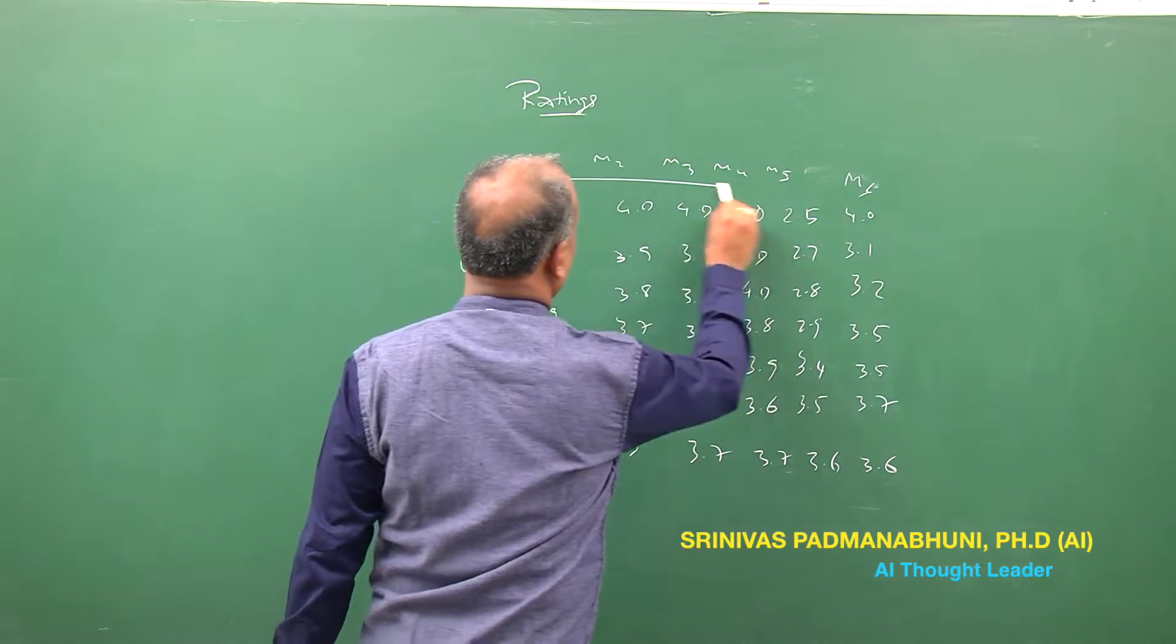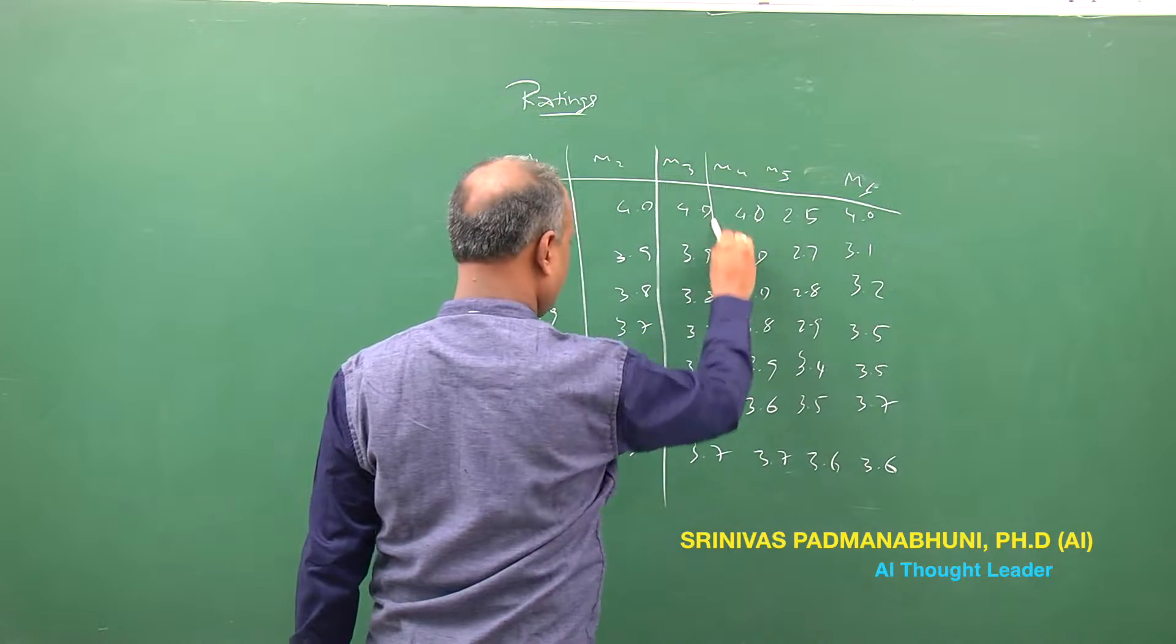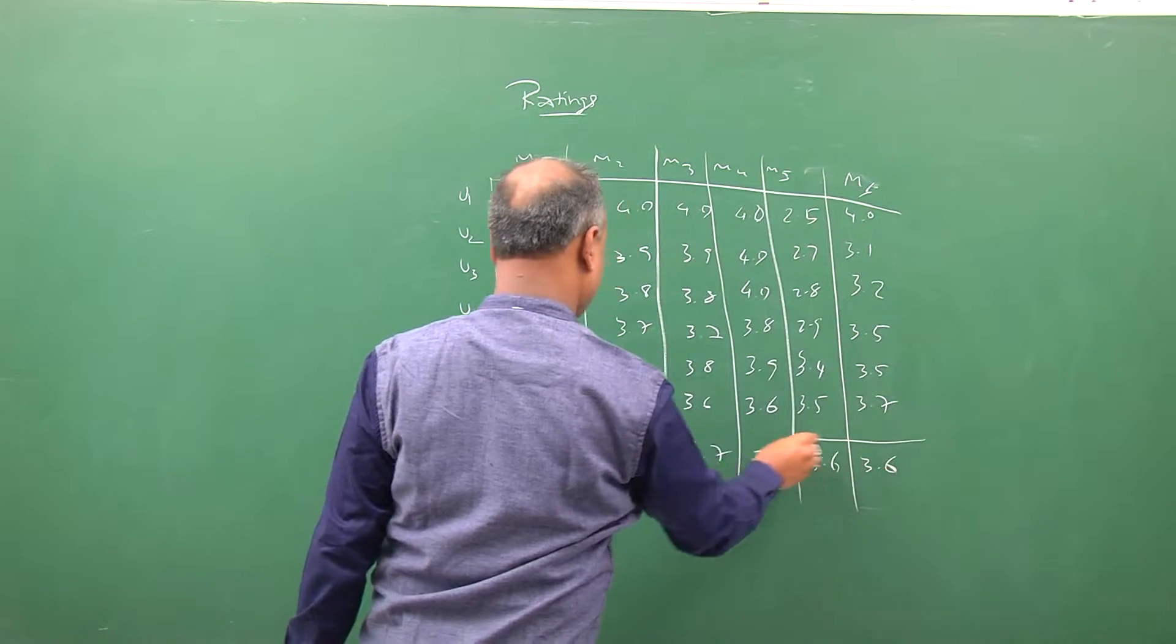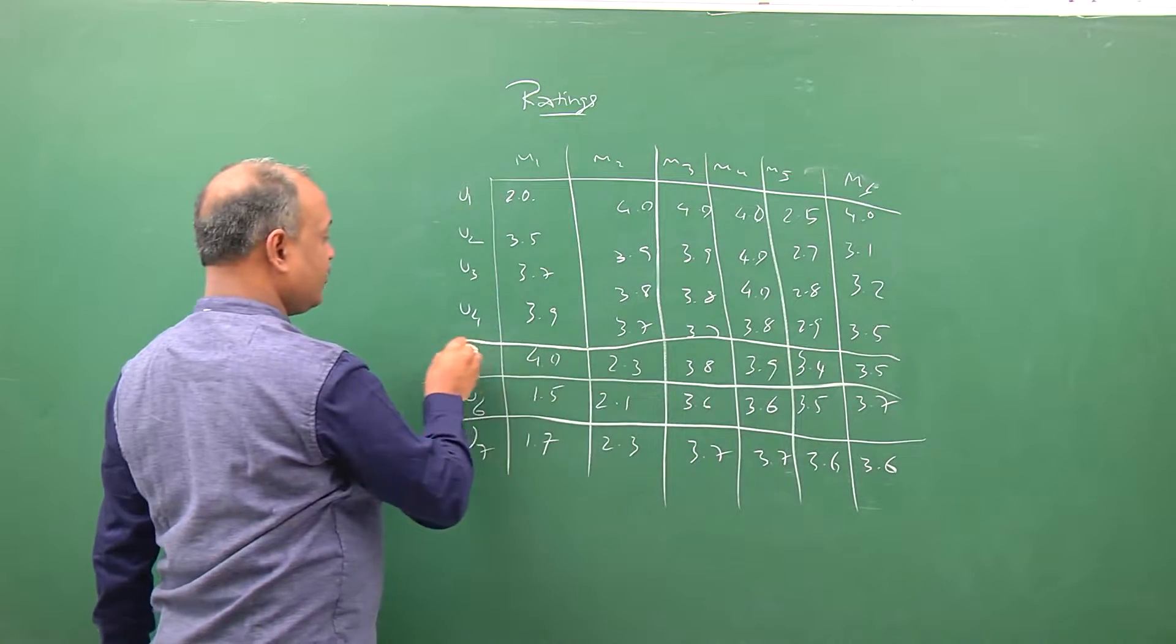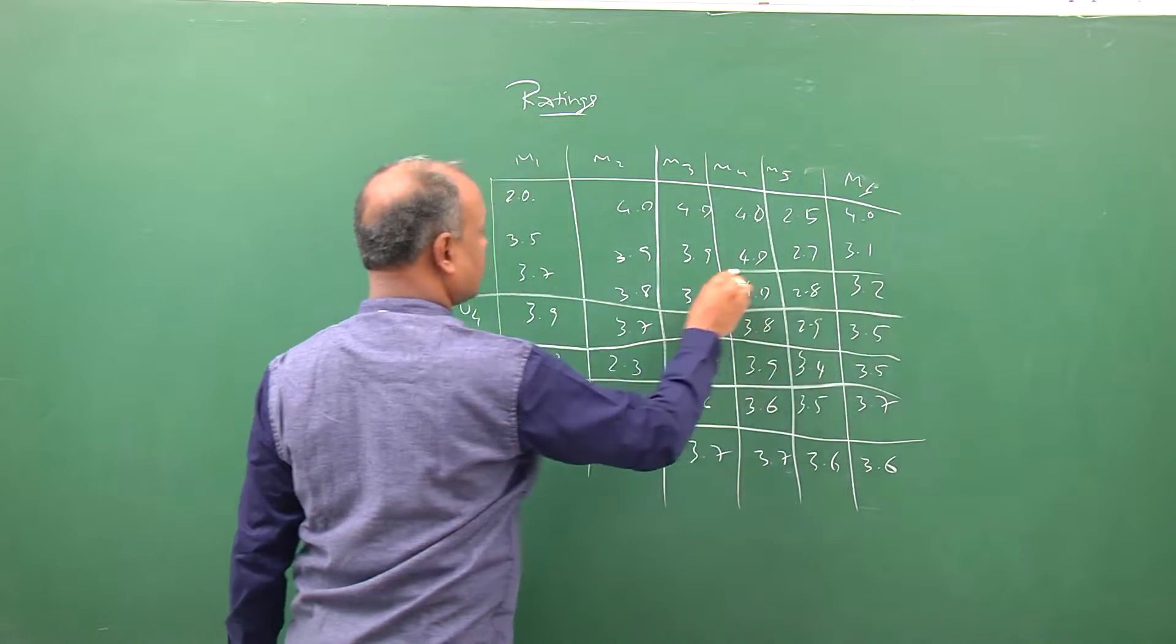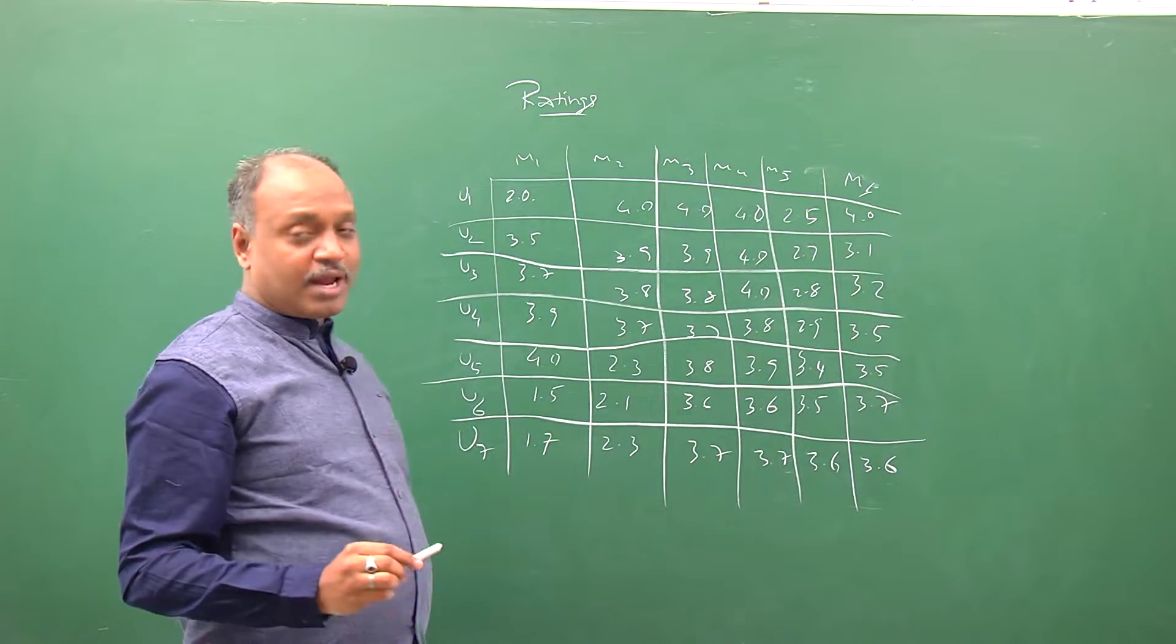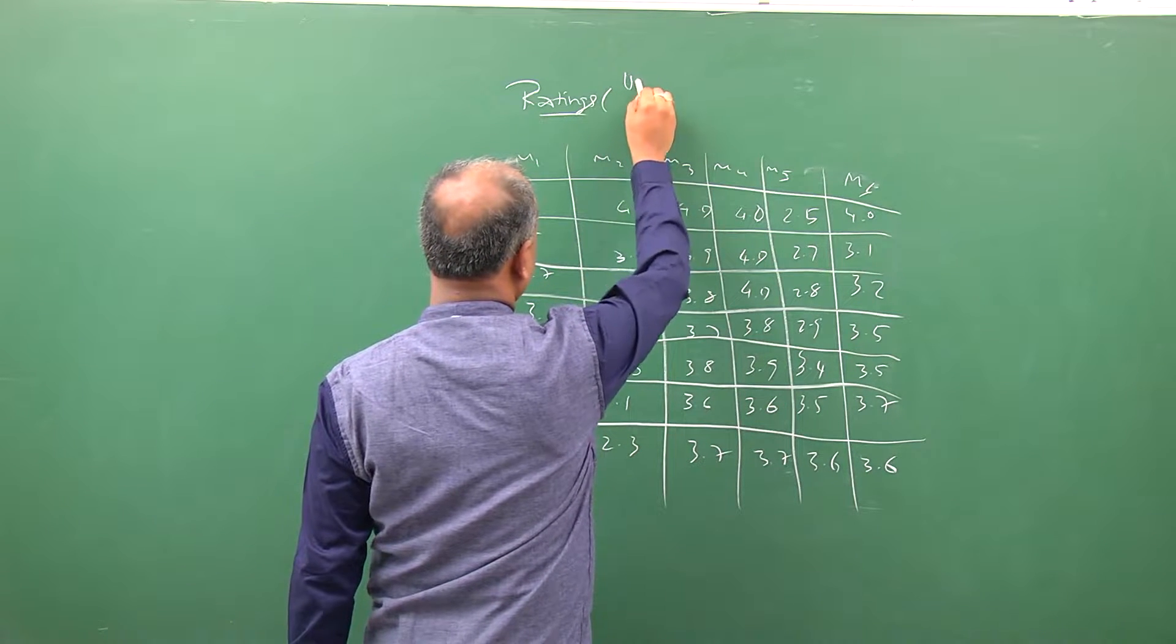Potentially recommending a new movie to a user, or extrapolating a rating that could be given by a new user or an old user who has forgotten to give a rating. The input to this becomes what is known as the user ratings.